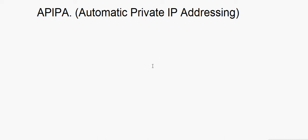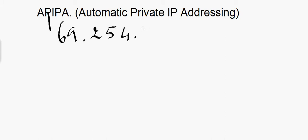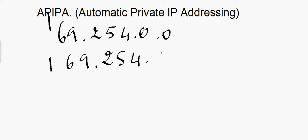APIPA addresses start from the following range: 169.254.0.0 up to 169.254.255.255. This is the range.